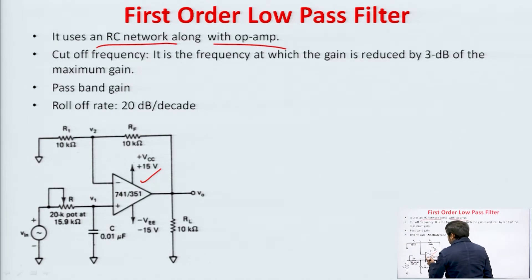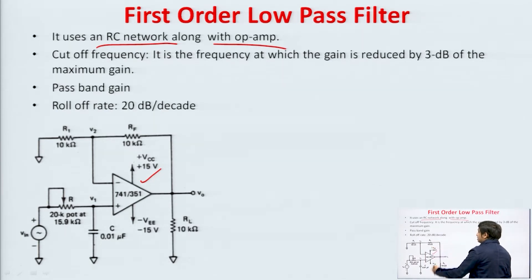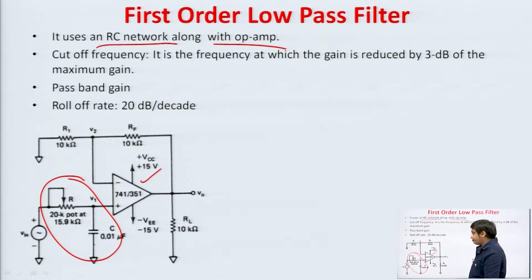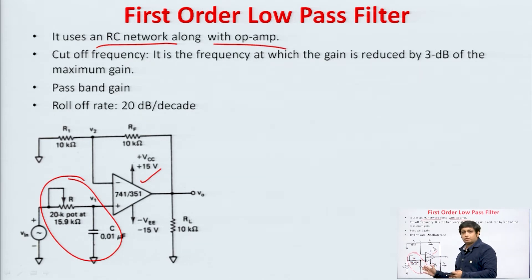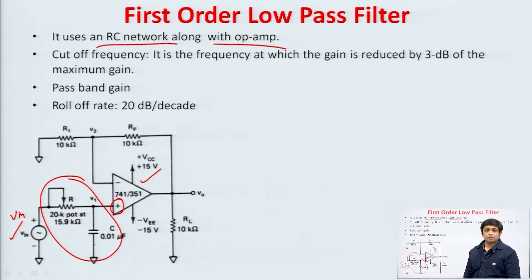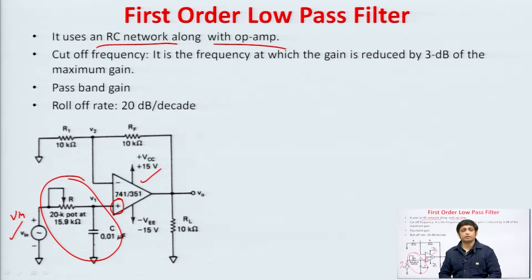We can see that in this first order low pass filter there are two portions. The first portion is the R and C which I have circled. This RC combination provides the filter function. If we use only this R and C and do not use this op amp it will become a passive filter. But in the active filter, the input signal V_in is applied at this RC section and this RC section is connected at the non-inverting input of the op amp. We are using the non-inverting configuration of the op amp because the input resistance of the non-inverting configuration is very high.